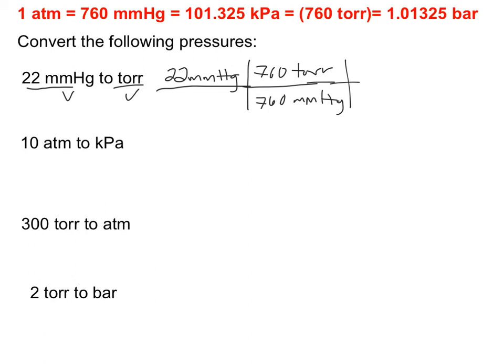But your conversion process needs to be shown in this type of dimensional analysis approach. So millimeters of mercury are going to cancel out, so I'm going to end up with 22 torr as my new unit set. So pretty straightforward.